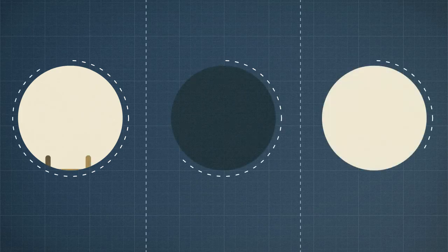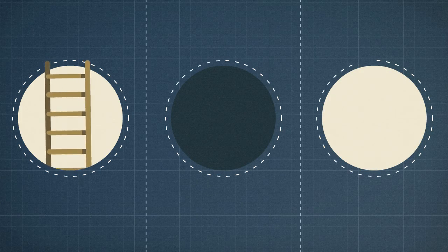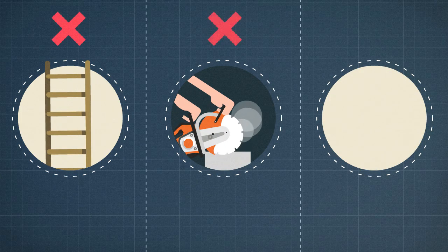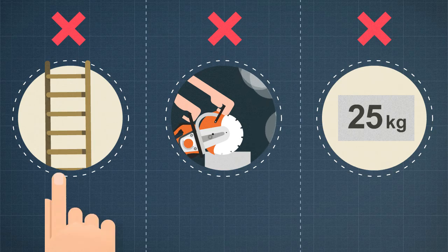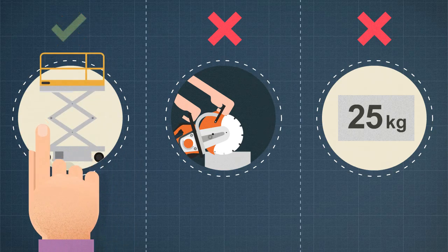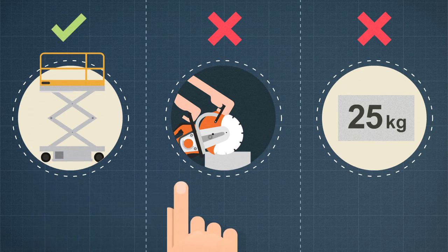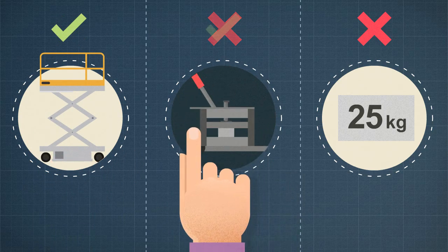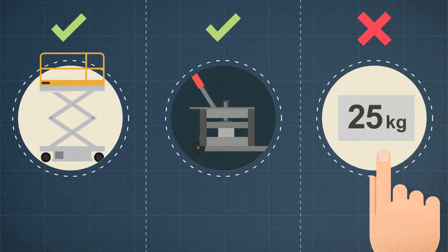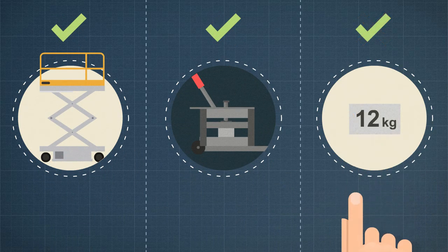The Principal Designer ensures that health and safety is considered during the planning phase of a project, including identifying, eliminating or minimising foreseeable health and safety risks.